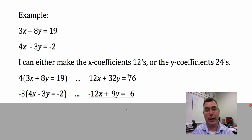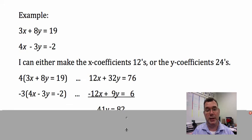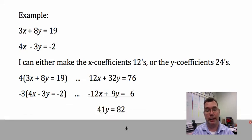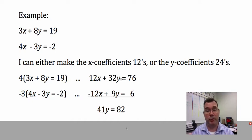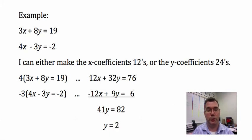Now that I have opposite x coefficients, I can add these equations together. If I do that, I get 41y = 82. I've taken two equations with two variables and combined them to make one equation with one variable. Dividing both sides by 41, I get y = 2.